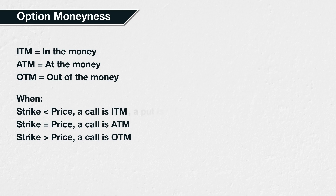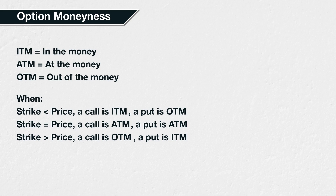For put options, when the strike price is less than the current asset price, the option is out of the money. When the strike price equals the current asset price, the option is at the money. And when the strike price is greater than the current asset price, the option is in the money.